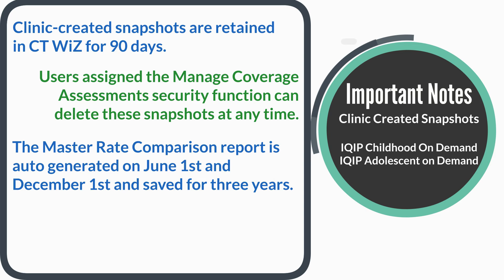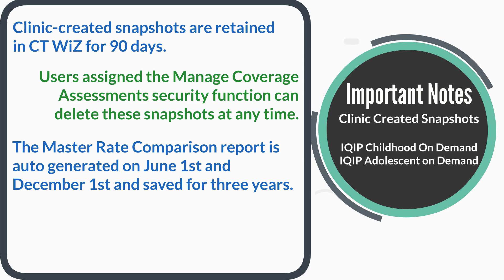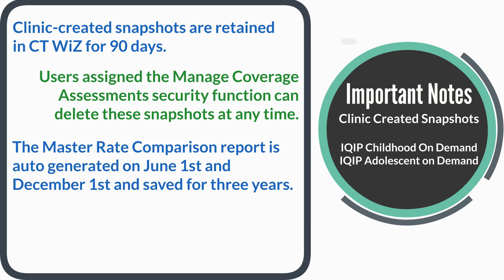The Master Rate Comparison Report is auto-generated for all clinics twice a year on June 1st and December 1st, and includes all standard childhood and adolescent vaccines. Master Rate Comparison Reports are saved for three years.